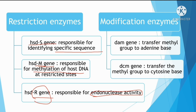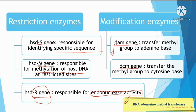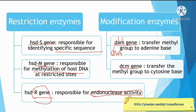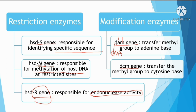The modifying enzymes are encoded by the DAM gene and the DCM gene. DAM is DNA adenine methyltransferase, which adds a methyl group to adenine bases. DCM is DNA cytosine methyltransferase, which adds a methyl group to cytosine bases. These modification enzymes add methyl groups from S-adenosylmethionine (SAM) to the DNA at adenine and cytosine bases only, using methyltransferase enzymes.